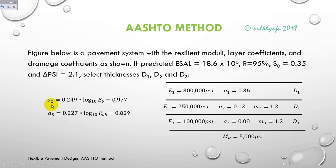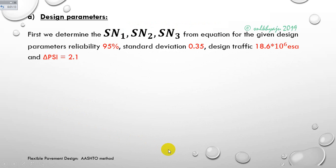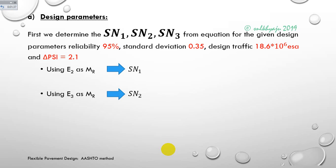For design parameters, we first determine structural numbers SN1, SN2, and SN3 from the AASHTO equation. Given: reliability 95%, standard deviation 0.35, design traffic 18.6 × 10^6 ESAL, and delta PSI = 2.1. Using E2 as MR, we determine structural number SN1. Similarly, using E3 as MR, we determine structural number SN2.